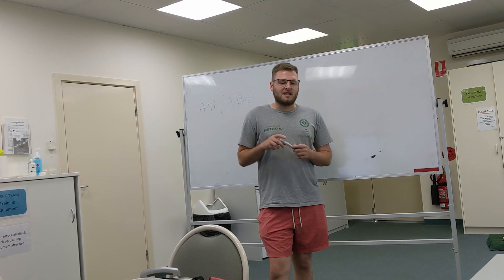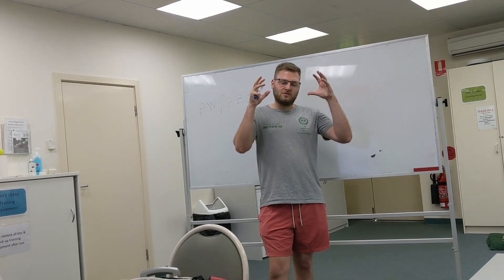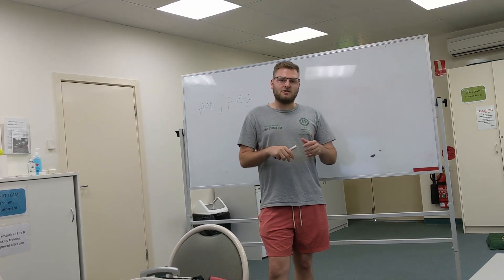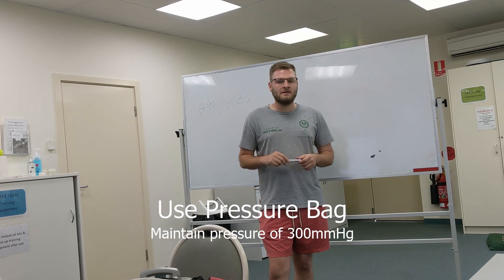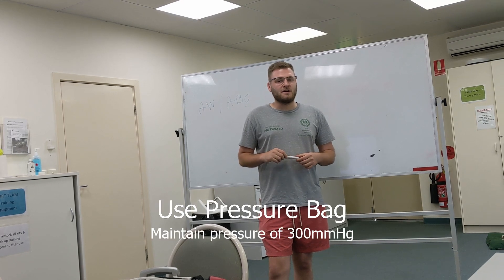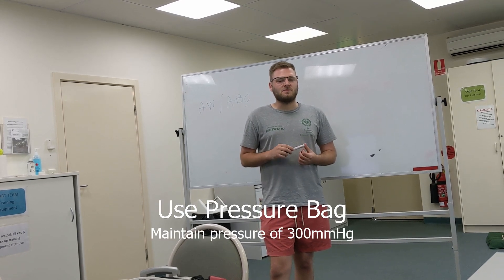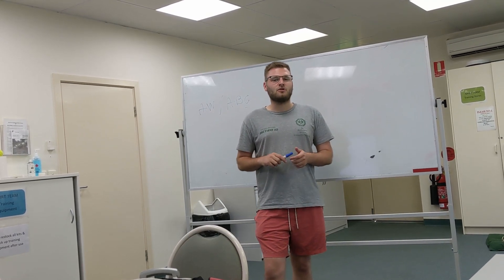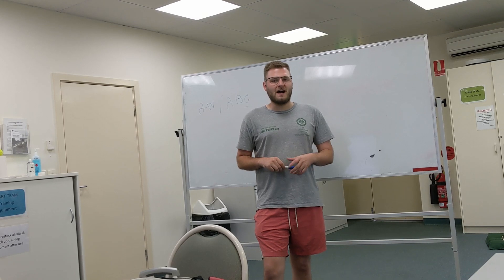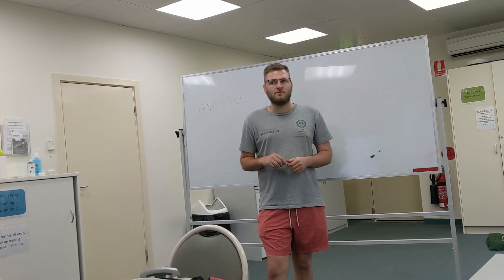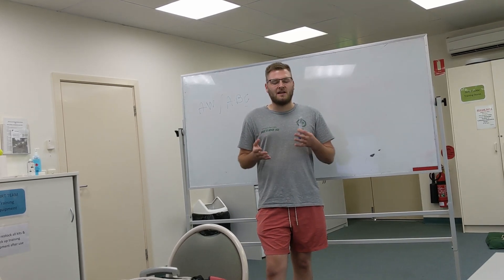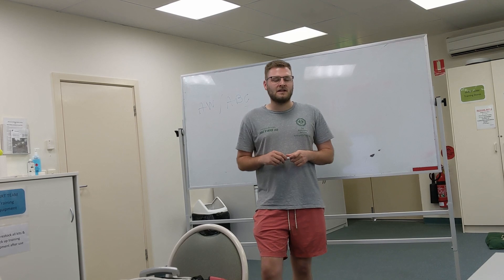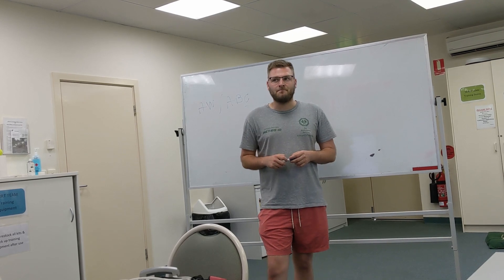A pressure bag is used to continue the infusion of sodium chloride through the arterial line. That bag must be inflated to a pressure of approximately 300 mmHg, or as indicated on the pressure bag itself, and it infuses about 3 to 5 millilitres per hour.